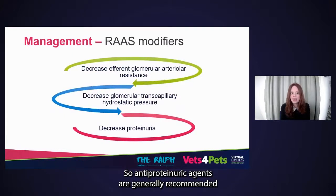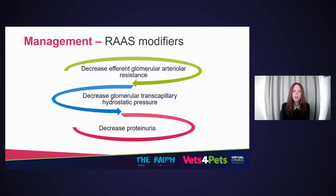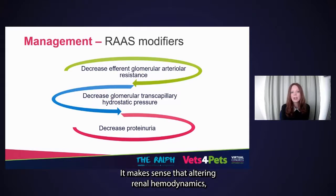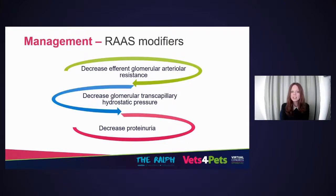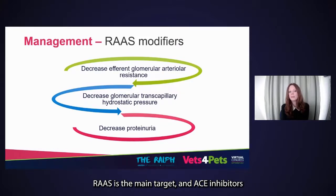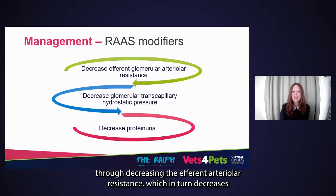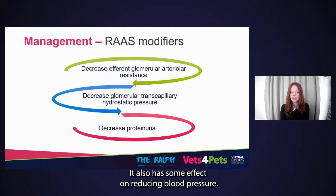Anti-proteinuria agents are generally recommended when the UPC is persistently above 0.5 to 1 in the dog. Because hemodynamic forces influence the transglomerular movement of proteins, altering renal hemodynamics is effective in reducing intraglomerular hypertension and proteinuria. RAS is the main target, and ACE inhibitors such as benazepril are typically used as first line. They act by reducing proteinuria through decreasing efferent arteriolar resistance, which decreases glomerular transcapillary hydraulic pressure and ultimately proteinuria. They also have some effect on reducing blood pressure.